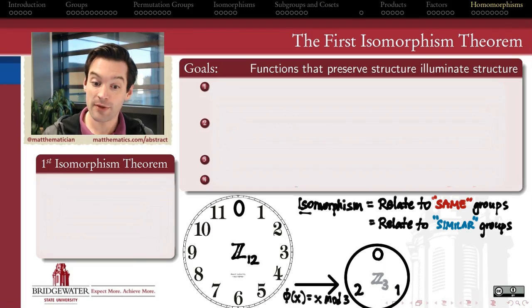Here's an example of a function that actually will give me a structure-preserving connection between Z12 and Z3. The function φ(x) = x mod 3. It just takes all these residues mod 12 and reduces them mod 3 to get a 0, 1, or 2. If we take a closer look at the properties that function has, the first thing we might notice is that 0, the identity element in Z12, gets sent to 0, the identity element in Z3. That's kind of a good sign. Identity maps to identity, so there's some structure-preservation happening with this function.